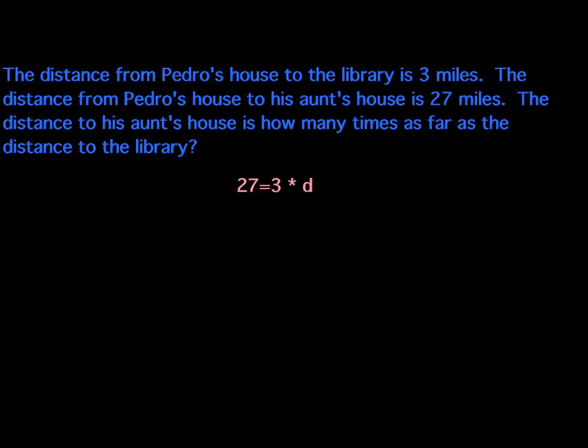So let's take a look at this one. The distance from Pedro's house to his aunt's house is 27 miles. The distance to his aunt's house is how many times as far as the distance to the library. So I gave you a little equation here, and I want you to think about why did I give you this particular equation with this word problem. 27 equals 3, and remember that asterisk means multiply, times D. Why would I give you that problem? Think about that for a minute.